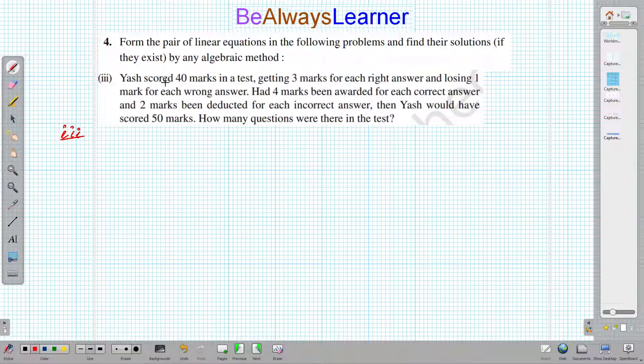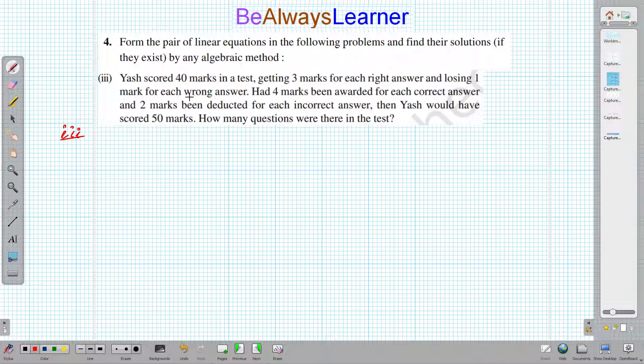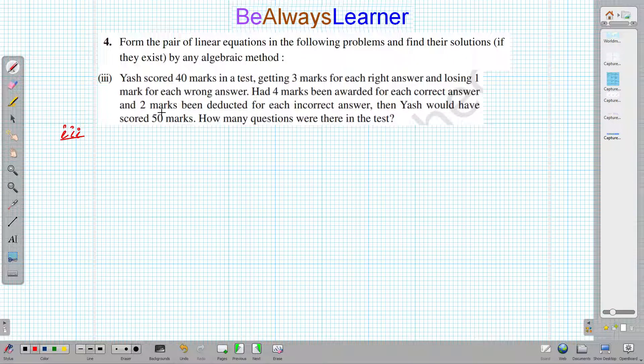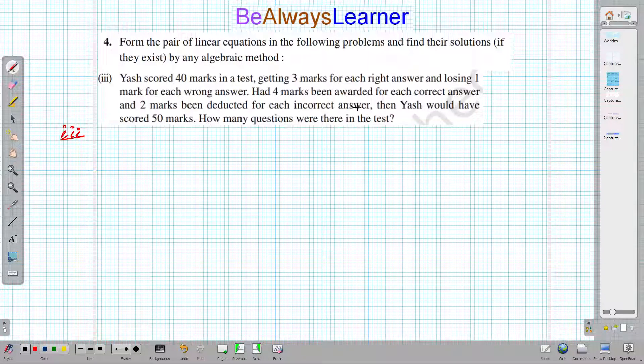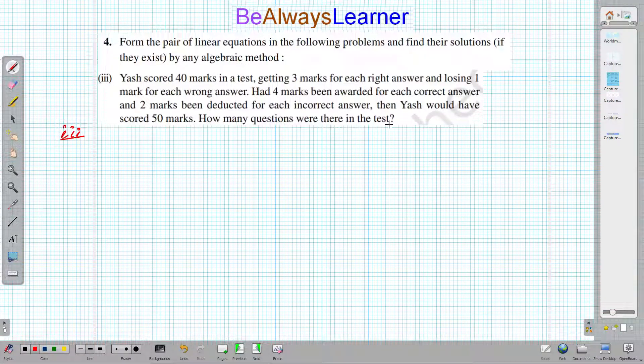Yash scored 40 marks in a test, getting 3 marks for each right answer and losing 1 mark for each wrong answer. Had 4 marks been awarded for each correct answer and 2 marks been deducted for each incorrect answer, then Yash would have scored 50 marks. How many questions were there in the test?